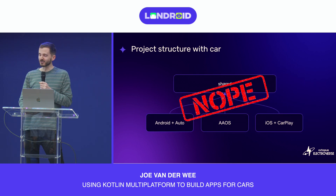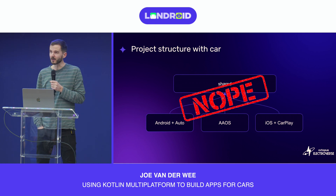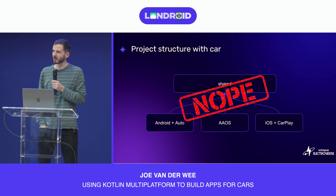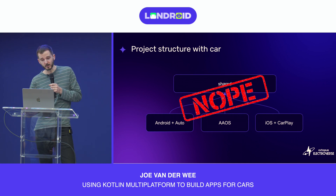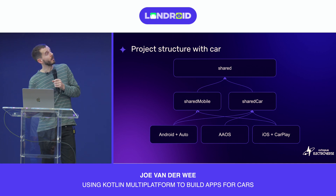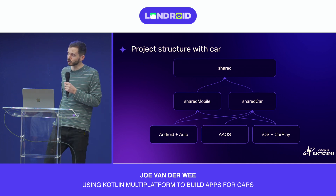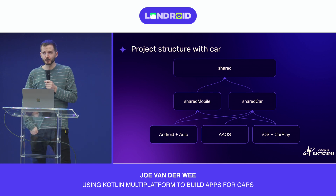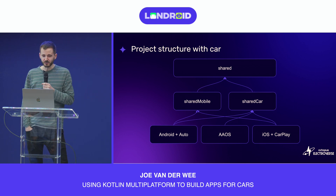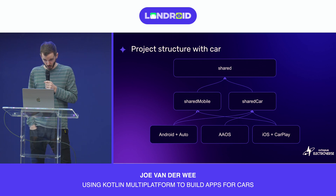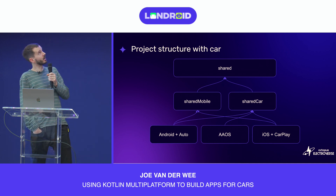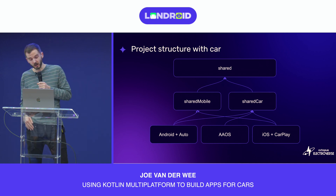Given these restrictions, the user experience pans out to be quite different from the mobile app, and our initial plan to share view models between mobile and car just didn't work out. There are also cases where it's beneficial to have car-specific implementations of our interfaces. This led us to breaking down our shared module into sub-modules, separating concerns between mobile and car. We now have a shared mobile Kotlin Multiplatform module for mobile-specific code, and a shared car Kotlin Multiplatform module for car-specific code.